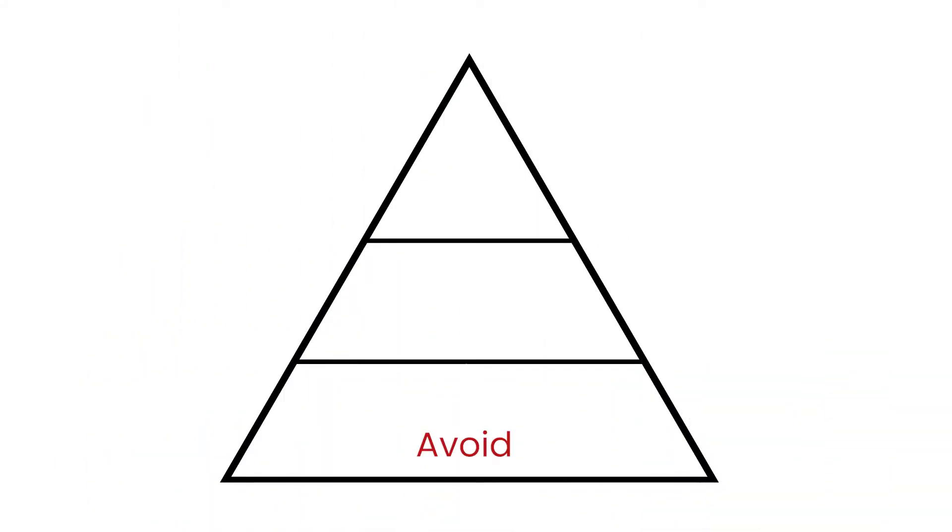Whether serious or non-serious, there are three elements to the hierarchy of control: avoid, prevent, and minimise.